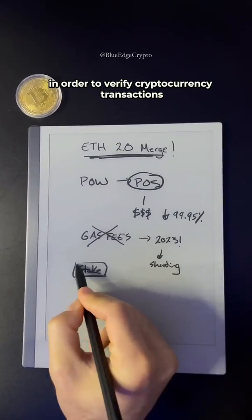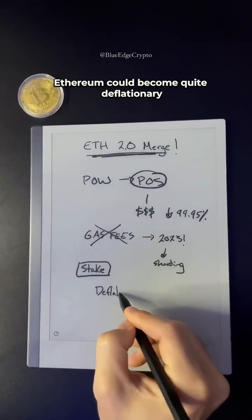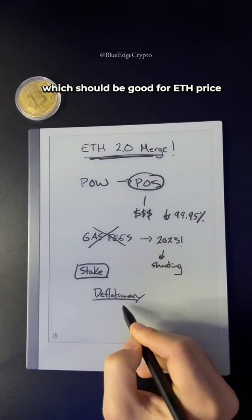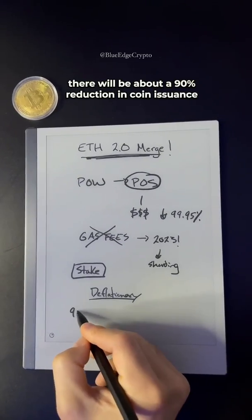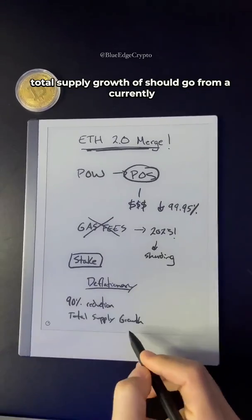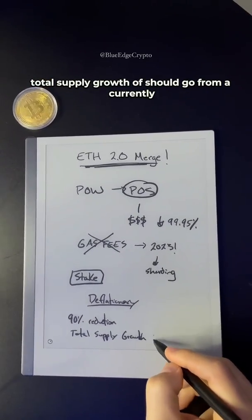When this merge happens, Ethereum could become quite deflationary, which should be good for ETH price. There will be about a 90% reduction in coin issuance.